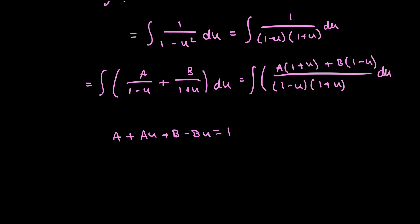And now I can create a system of equations based off of my coefficients. So I have a plus b is equal to 1 and a minus b is equal to 0. So the result from my second equation tells me that a is equal to b. And so I can very quickly get that a is equal to b is equal to 1 half.